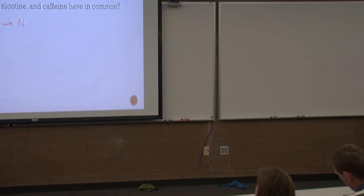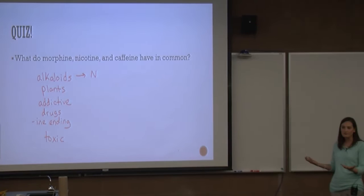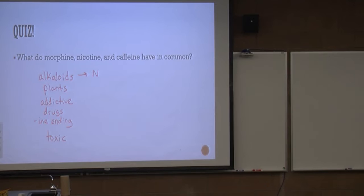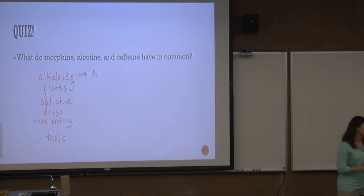I do want to go back to alkaloids. Alkaloids are a class of drug molecules that come from plants — so plants goes up there. And they're basic, so they're alkaline, and the basicity of these comes from them containing a nitrogen atom. There's a whole class of drugs under alkaloids — they come from plants and they're basic drugs, and these happen to be three of them.